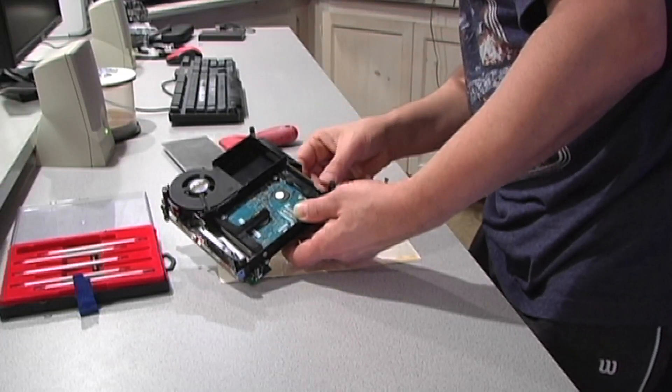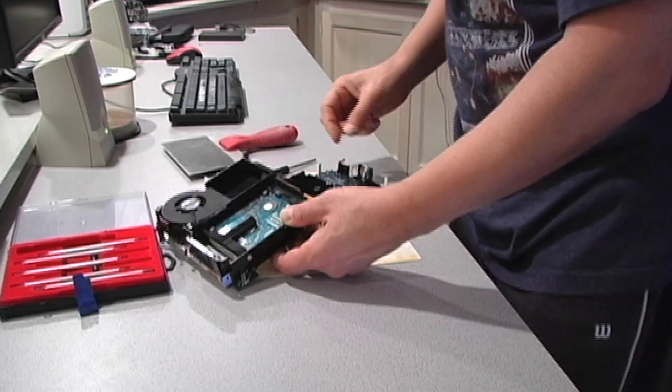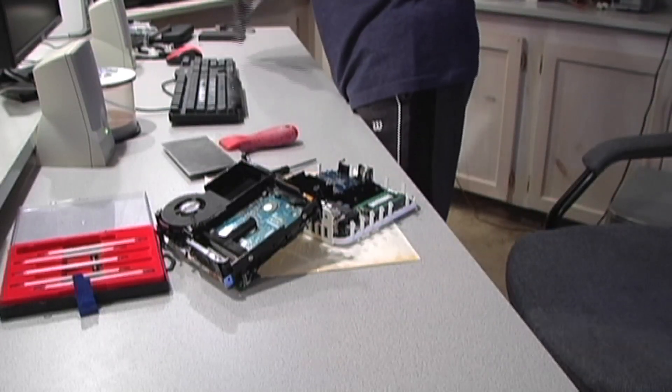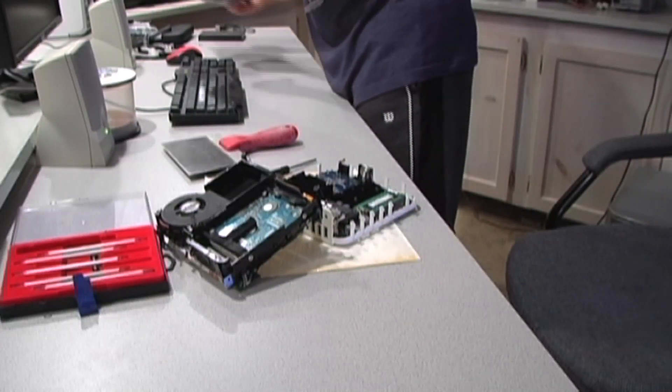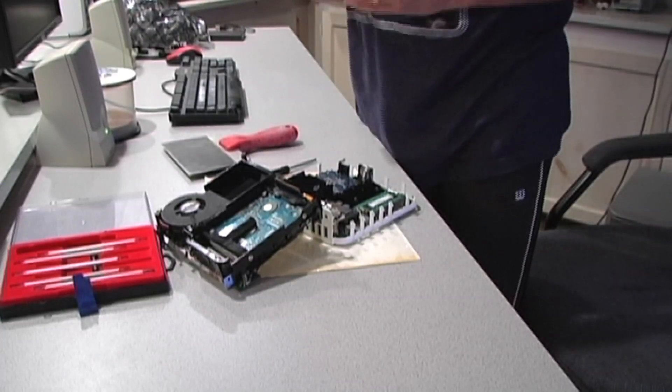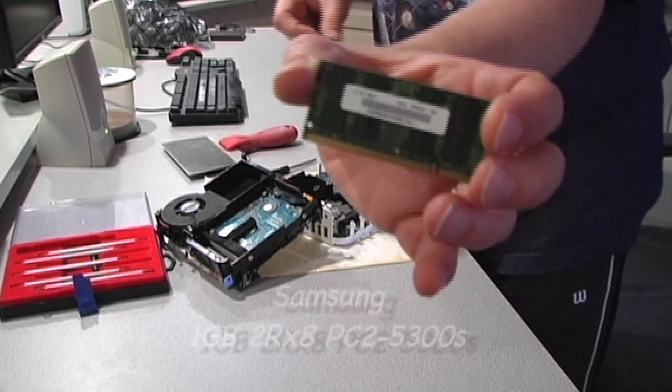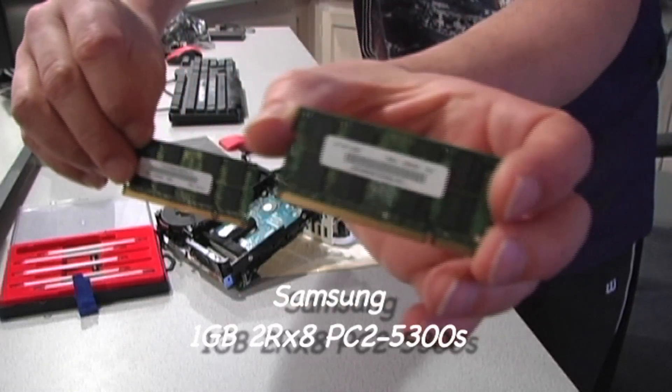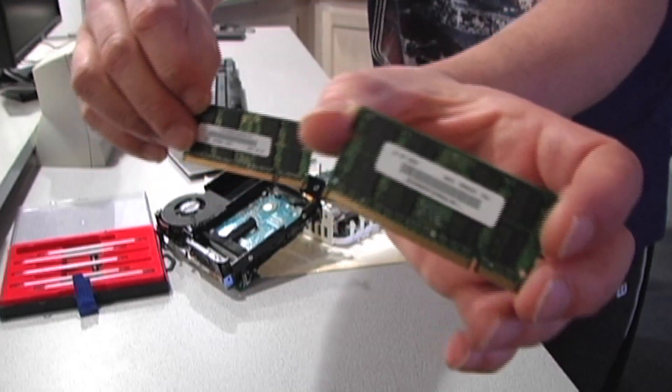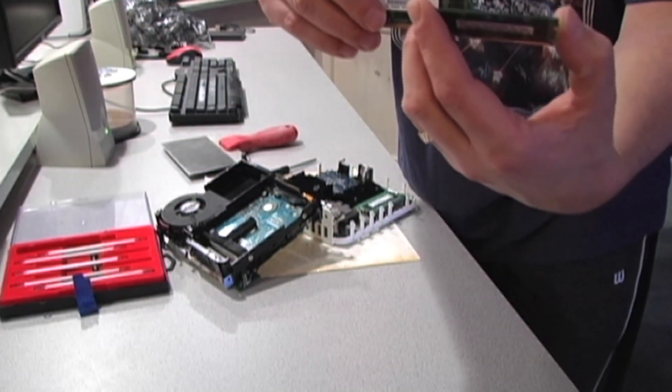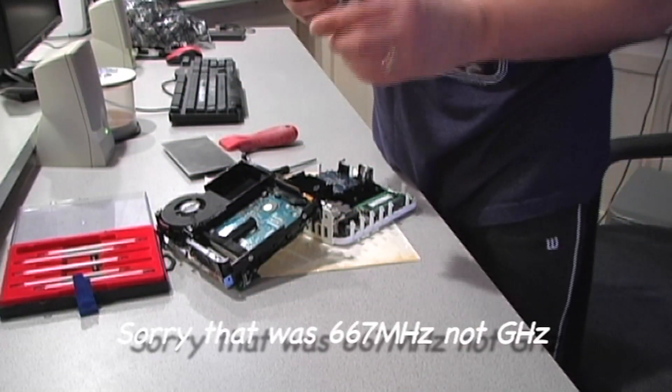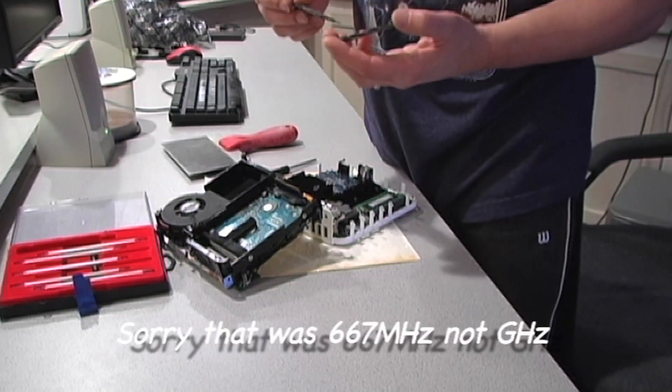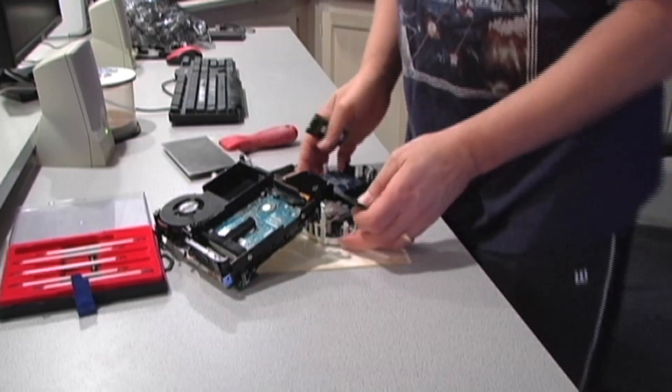Now memory. One gig, one gig Samsung. They're 5300, 667 megahertz, one gig each.